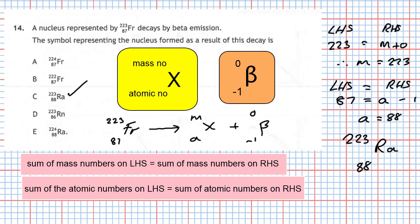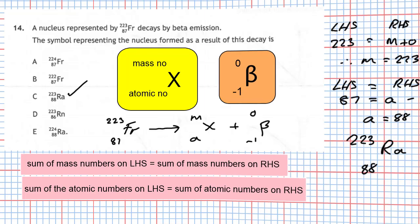Question 14 is a nuclear reaction question. The key things to remember: the sum of the mass numbers on the left-hand side equals the sum of the mass numbers on the right-hand side; the sum of the atomic numbers on the left-hand side equals the sum of the atomic numbers on the right-hand side. Set up your equations, solve for the missing numbers. Answer is C for question 14.